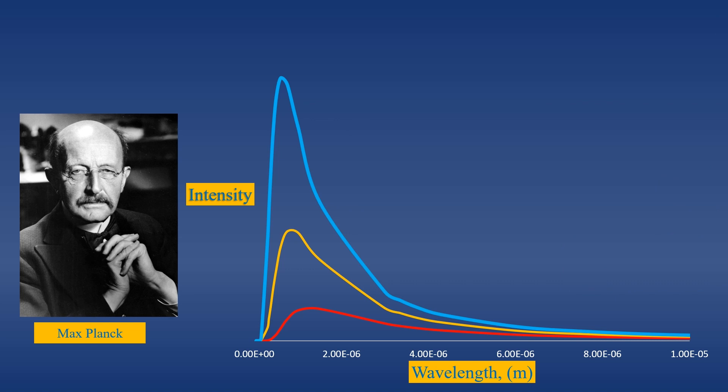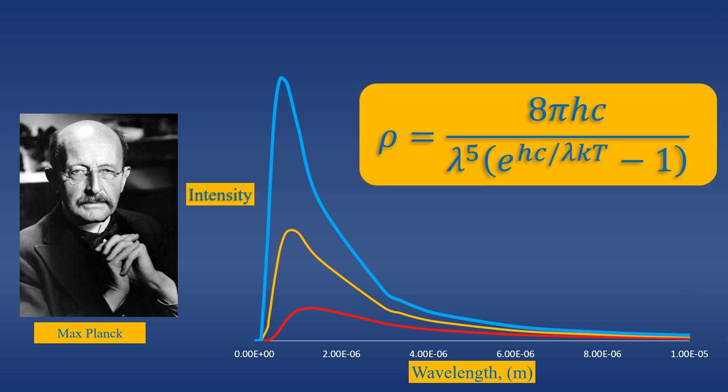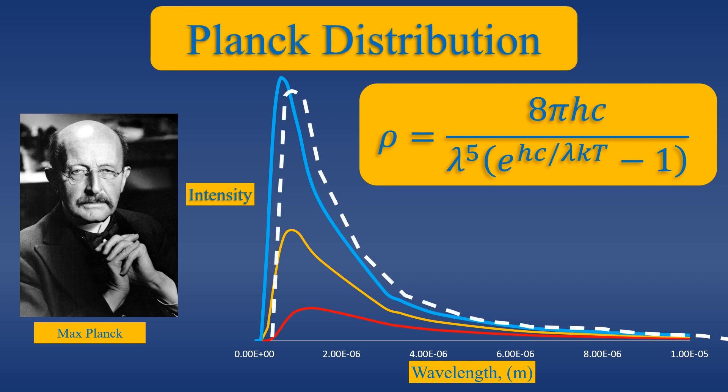In fact, Planck was able to recreate the spectral density distributions with this equation, which is also called Planck's distribution. In inspecting the equation, we see that at high wavelengths, the exponential term in the denominator approaches zero, leading to the agreement with the Rayleigh-Jean equation.